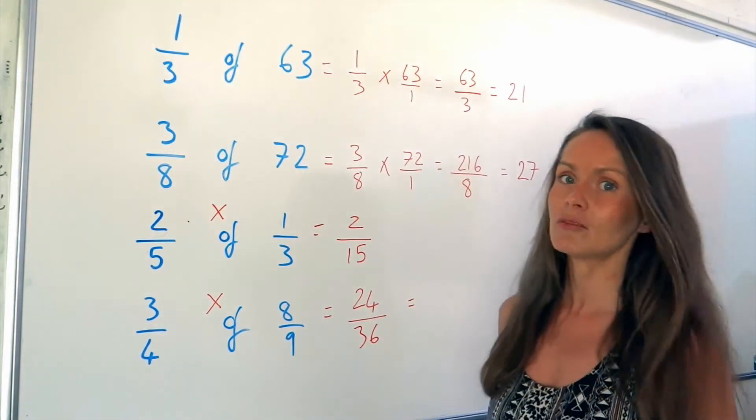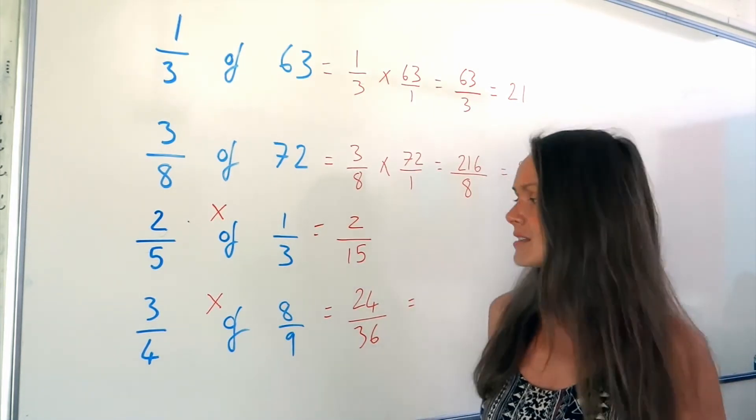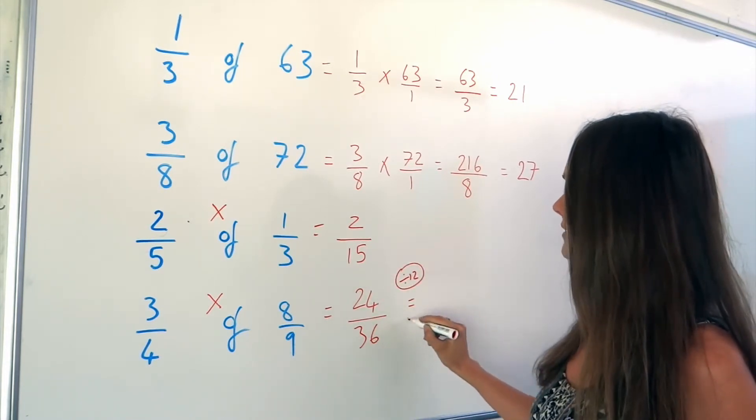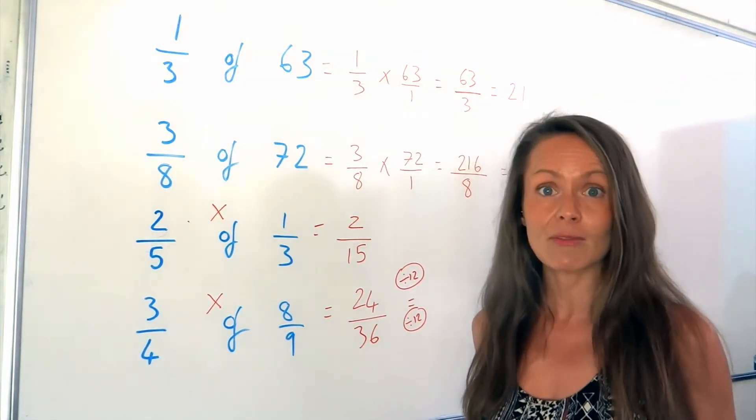Now, I can simplify this fraction. There's a common factor in 24 and 36. The highest common factor is 12. If you can divide by the highest common factor, you'll get to your final simplified fraction even quicker.